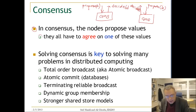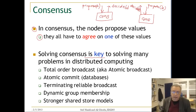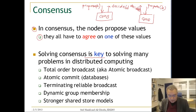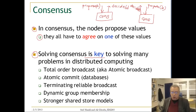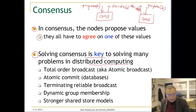Consensus is key for solving many problems and is at the core of many systems. For example, in Google's data center there is a service called Chubby which uses consensus. Many other systems at Facebook and Yahoo also use consensus as a basic service. Problems we will see include total order broadcast and atomic commit.